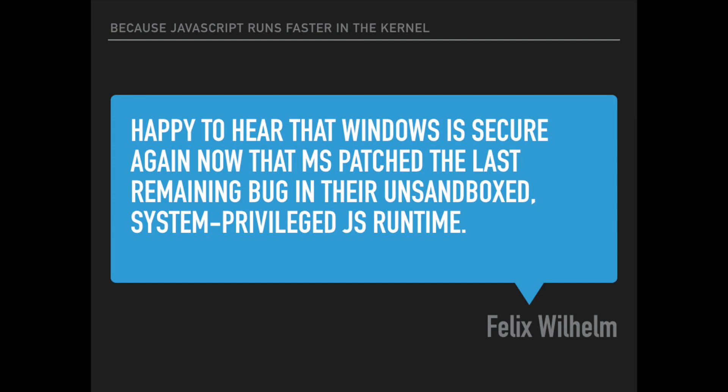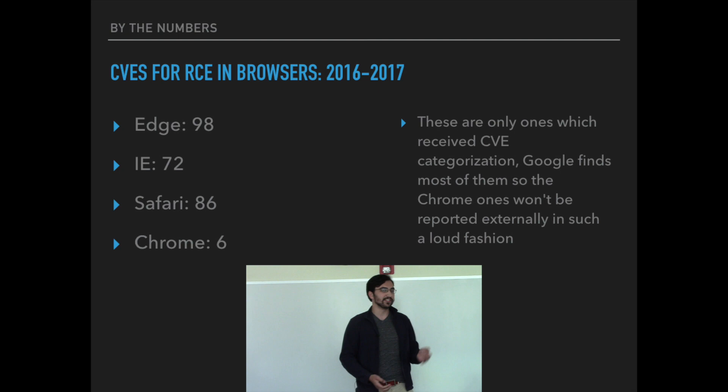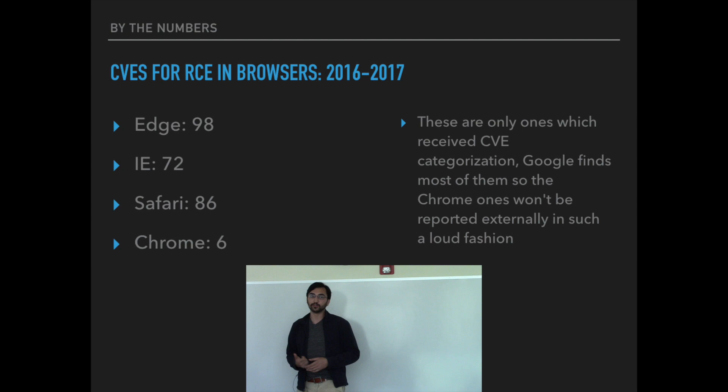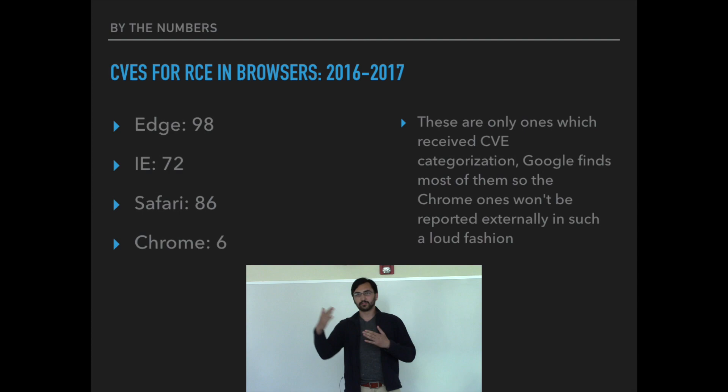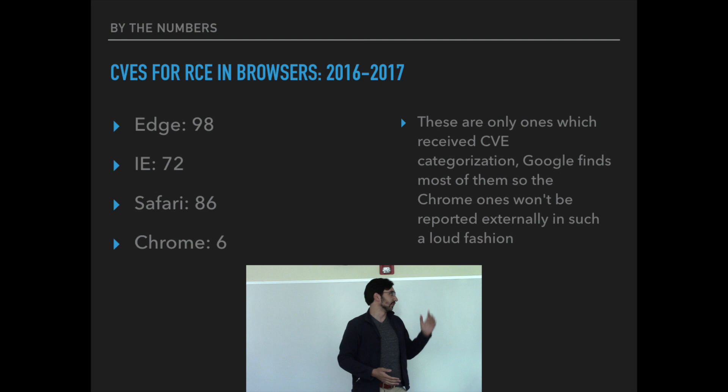This shows how many CVEs — essentially categorized vulnerabilities — have occurred in some of the more popular browsers. You'll note that Chrome is way below everyone else. That's because a team at Google called Project Zero finds most of these bugs, so they're not going to report them externally when they'd just be reporting to themselves. Chrome's count is likely much lower, though probably not as low as the number shown compared to others.